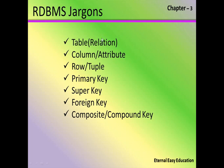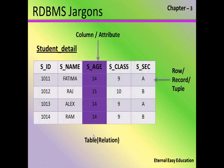Now coming to the topic of jargons. You are going to learn: table, column, row, primary key, super key, foreign key, and composite or compound key. See the table given here — it's a student detail table. In this table there are five columns: student ID, student name, student age, class, and section. There are four rows. A single row is a related meaningful piece of information, and each row is said to be a record. A column is said to be an attribute. A collection of columns and rows together forms a table, also called a relation.